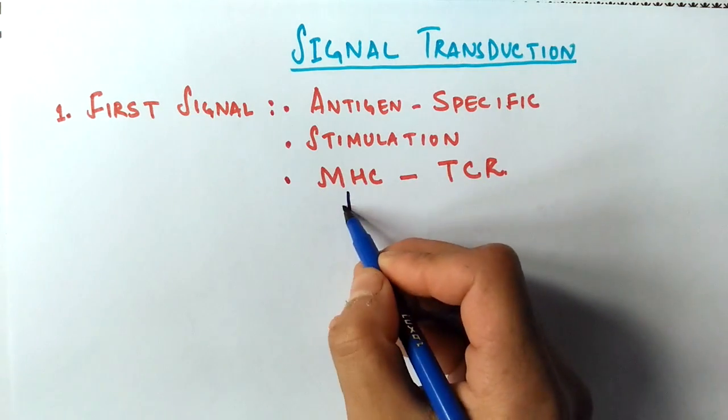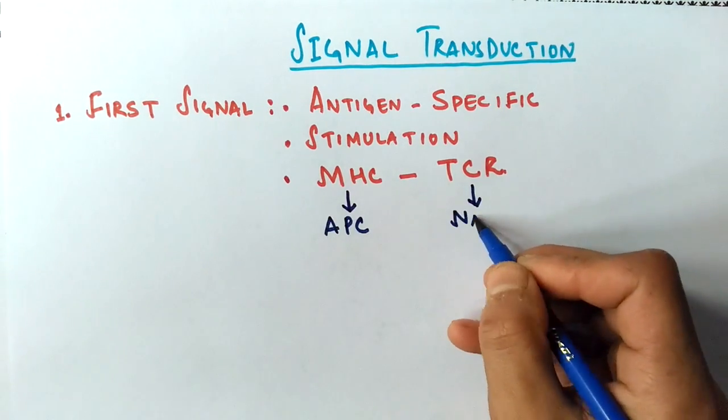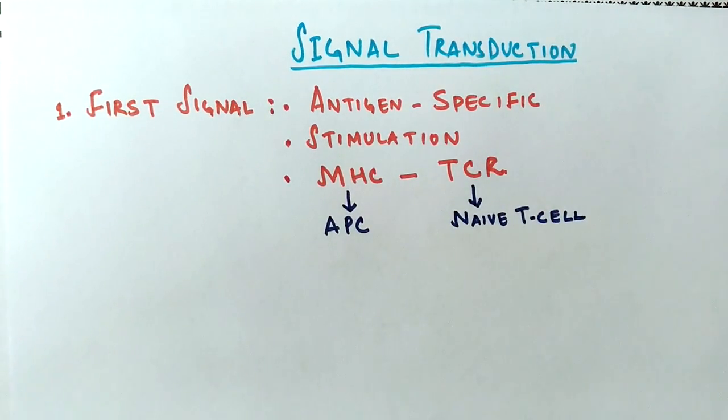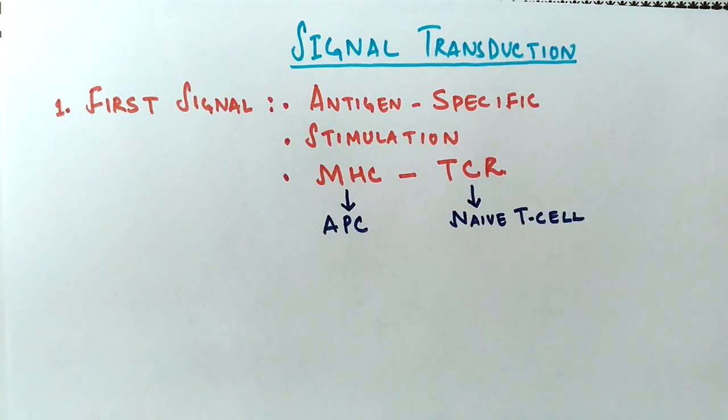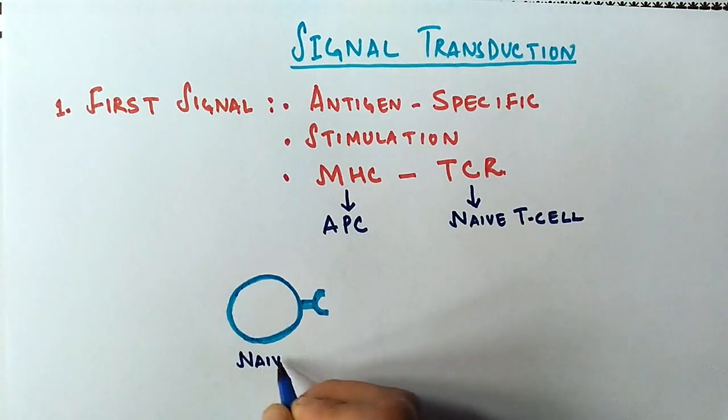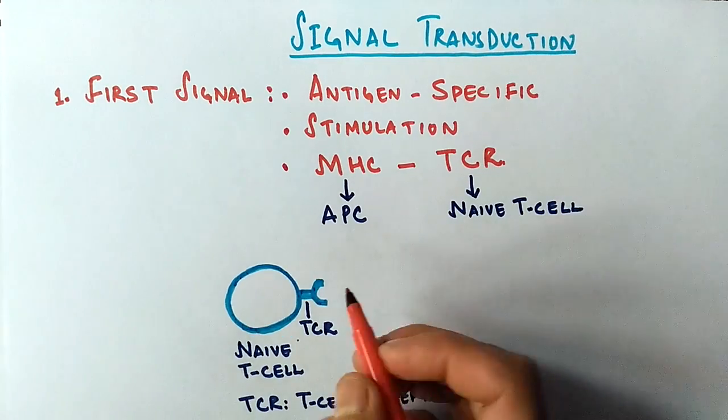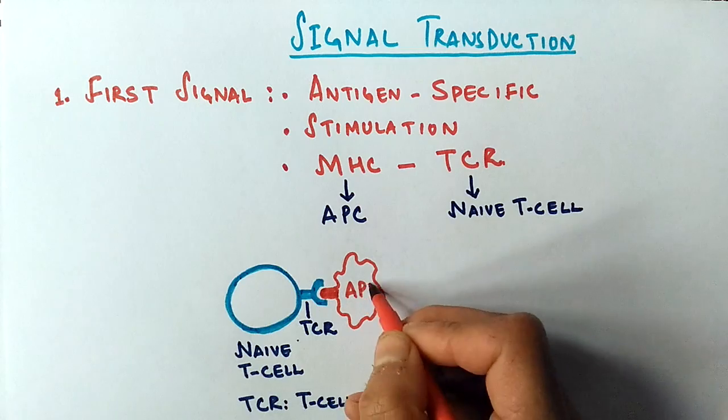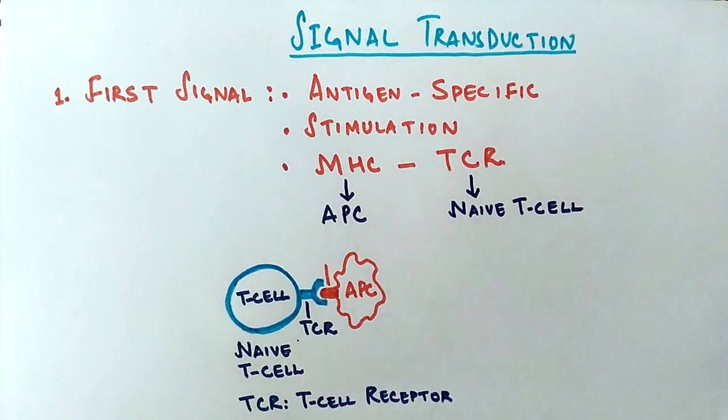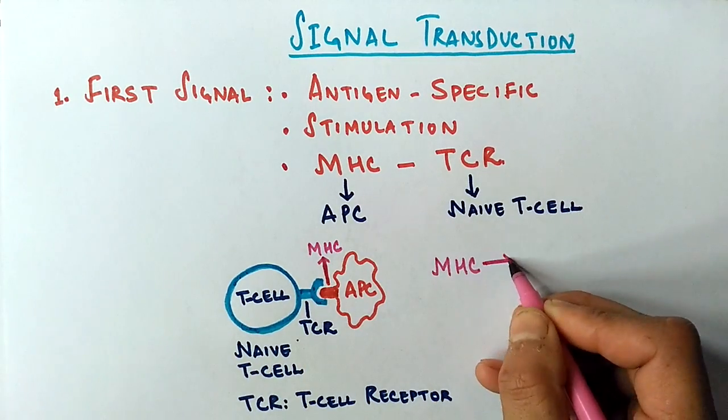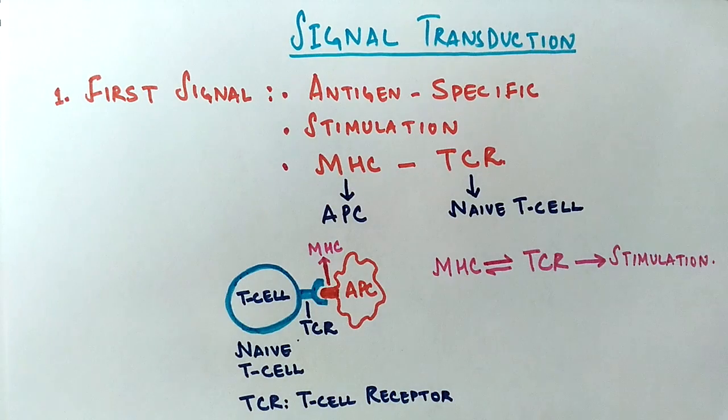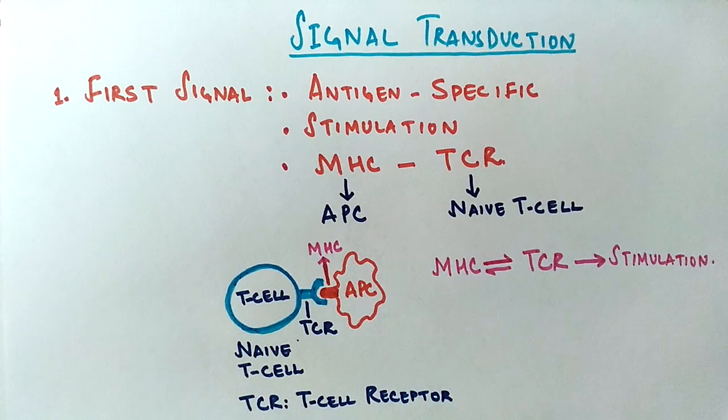MHC molecule is present on APC, antigen presenting cell, and TCR is present on naive T cell, whether it may be CD4 positive or CD8 positive cell. Like we have T cell here with this TCR region that interacts with MHC molecule present on antigen presenting cell. So this is a stimulation signal that the T cell gets stimulated by.